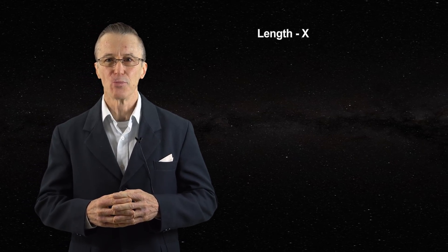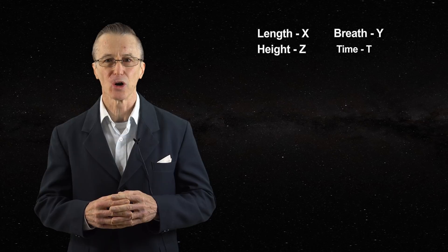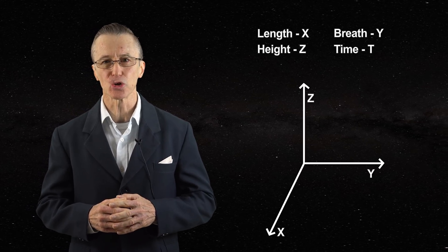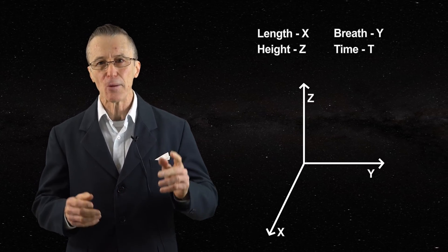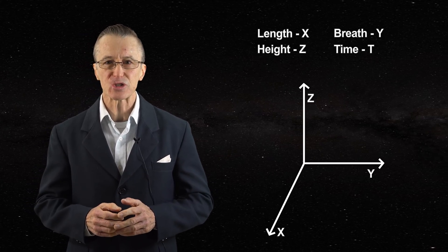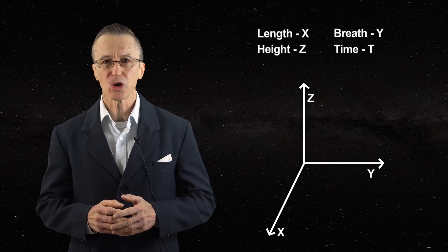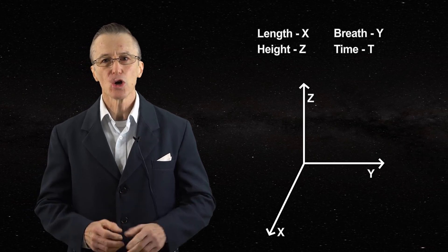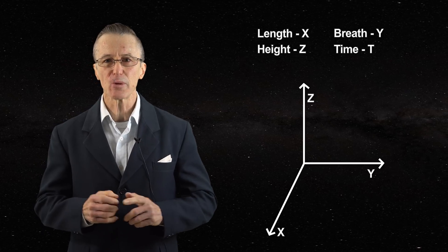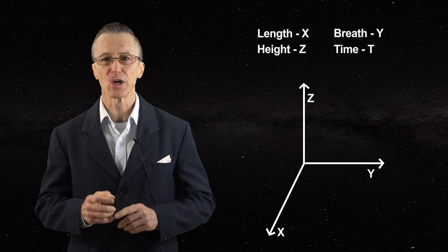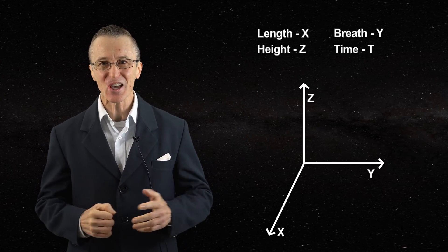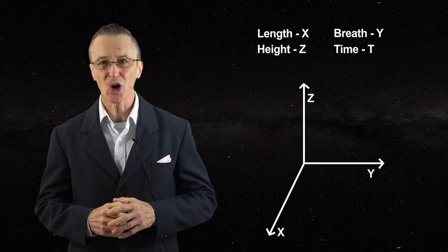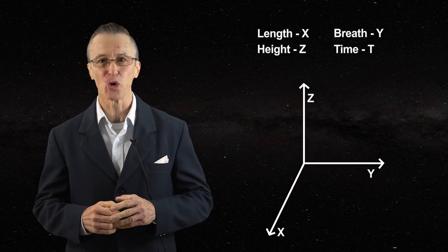The real world is characterised by four dimensions: length x, breadth y, height z, and time t, where the x, y and z axes are perpendicular to each other, but time is not. Length, breadth and height are measured in units of distance, such as the metre, while time has its own units, such as seconds. Using this system, any time and place can be denoted by the four coordinates t, x, y and z. Because distance and time have different units, time or time squared cannot be added to distance or distance squared.